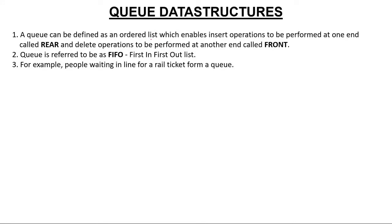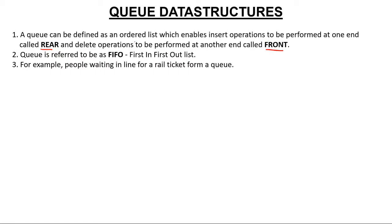A Queue can be defined as an ordered list — something which enables insert operation to be performed at one end called rear, and delete operation to be performed at another end called front. So Queue is a linear data structure in which you can insert elements from the rear, that is from the back side, and you can delete elements from the front.